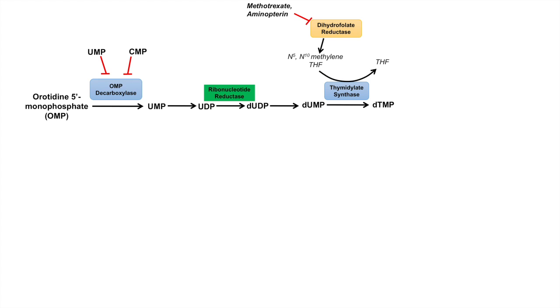There's also another chemotherapy drug that actually acts directly on thymidylate synthase, and that is 5-fluorouracil. This is a chemotherapy drug that is used in various types of cancer. But the target of 5-fluorouracil is actually thymidylate synthase. Once we have dTMP, it'll be converted to dTDP and then to dTTP.